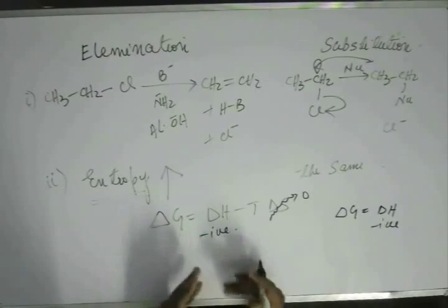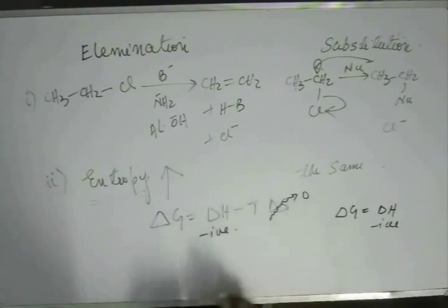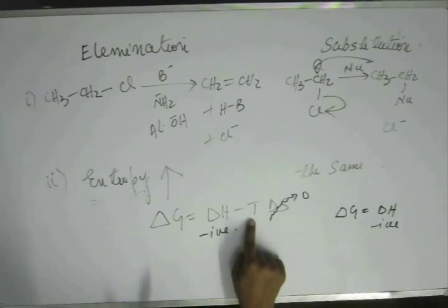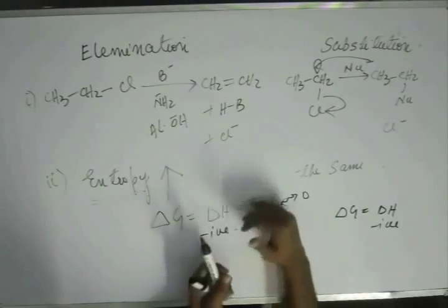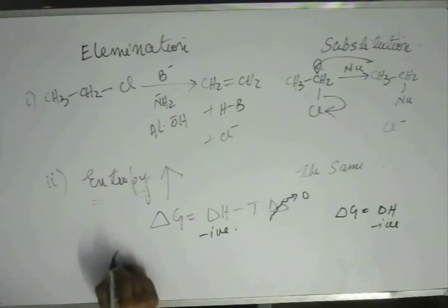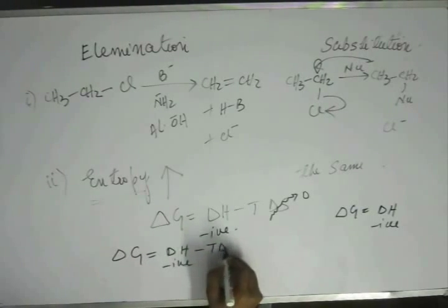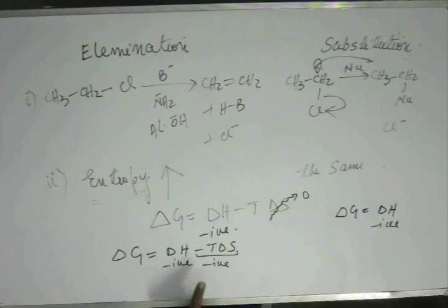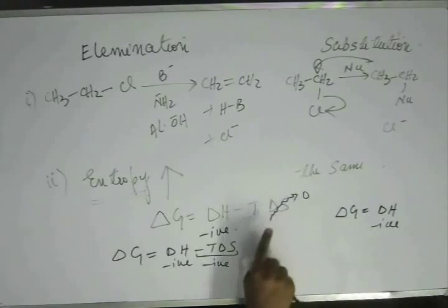In the case of elimination, ΔH is of course negative. Apart from that, entropy has increased, so ΔS is positive. Temperature in Kelvin is always positive, so TΔS is a positive term, and having a minus sign makes the whole −TΔS term negative. So both ΔH and −TΔS are negative, making ΔG more negative. As you increase temperature, ΔG of elimination becomes more and more negative, while ΔG of substitution is not much affected by temperature since its ΔS term is approximately zero.